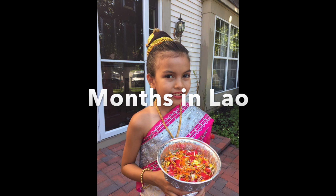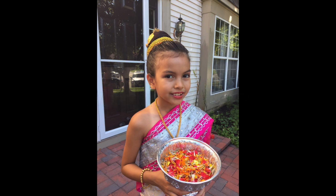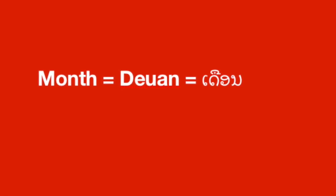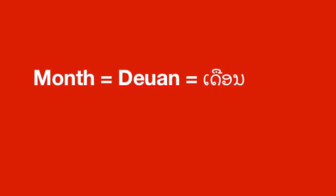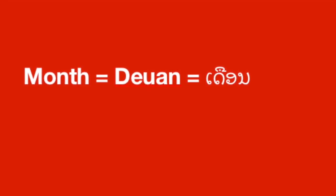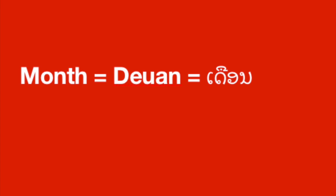For the months in Lao, you put the word in front of every month. Just like when you say the days in Lao, you put one word — which means 'day' — in front of each day. Okay, let's get started.